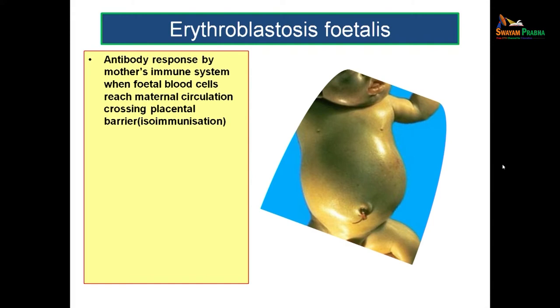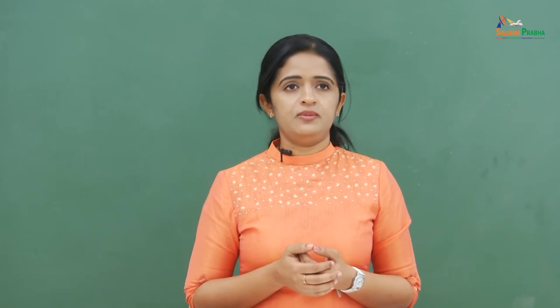In this condition, there is an antibody response by the mother's immune system when fetal blood vessels reach the maternal circulation, crossing the placental barrier. Usually the fetal blood vessels won't reach the maternal blood, but at times it might get mixed up with maternal blood, crossing the placental barrier due to some defects. As a result, the mother's blood will start producing antibodies, resulting in destruction of the fetal red blood cells.